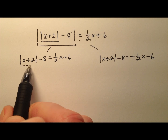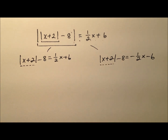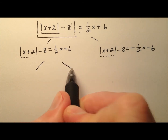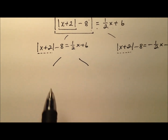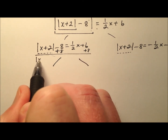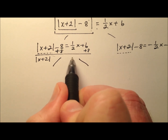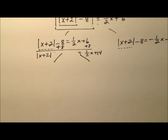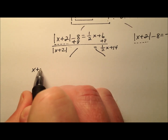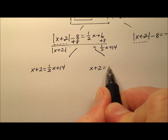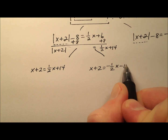You'll notice I still have absolute value expressions, so I'll need to split up again into two more — ultimately I'll have four equations to solve. Let's take the first one down into two. Adding 8 to both sides, I end up with the absolute value of x plus 2 on the left equals one-half x plus 14 on the right. Splitting this up: x plus 2 equals one-half x plus 14, and x plus 2 equals negative one-half x minus 14.